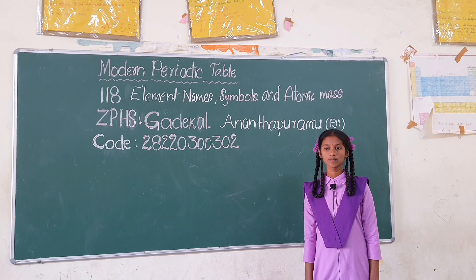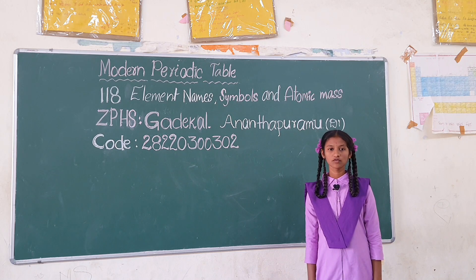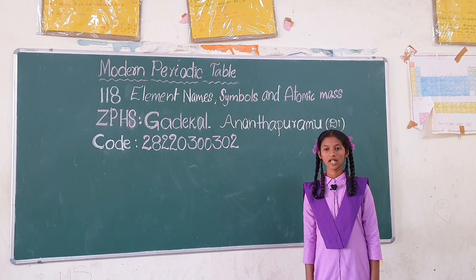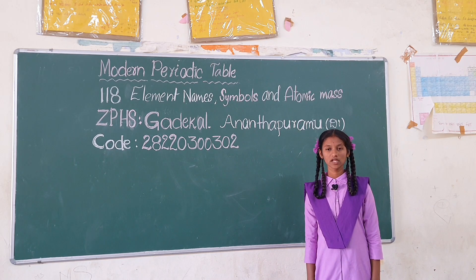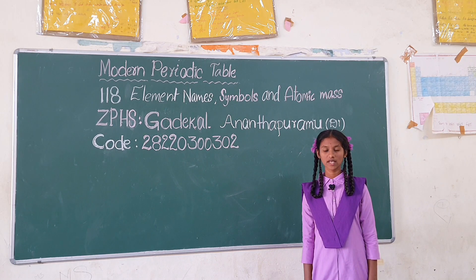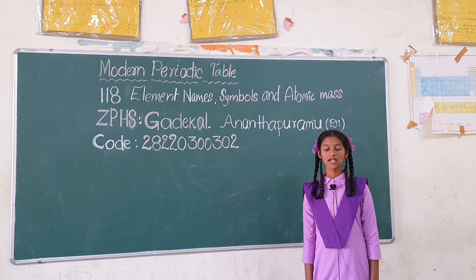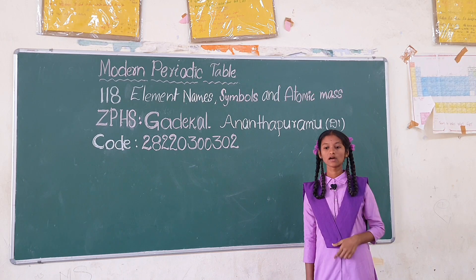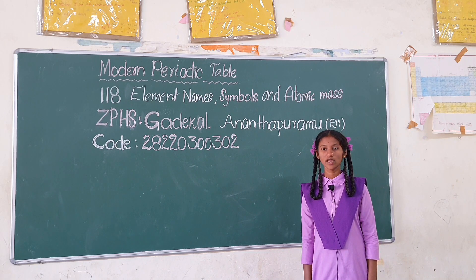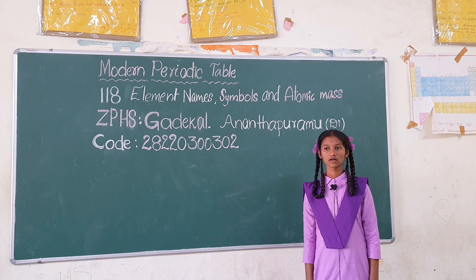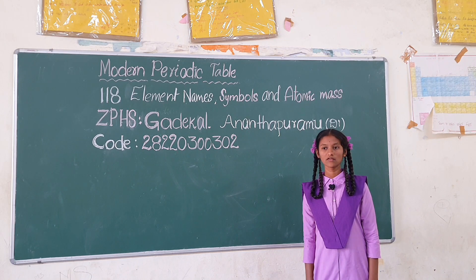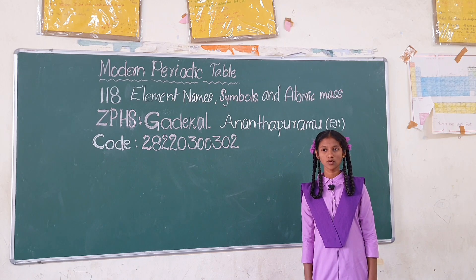Einsteinium Es 252, Fermium Fm 257, Mendelevium Md 258, Nobelium No 259, Lawrencium Lr 262, Rutherfordium Rf 265, Dubnium Db 268, Seaborgium Sg 271, Bohrium Bh 270, Hassium Hs 277, Meitnerium Mt 276, Darmstadtium Ds 281, Roentgenium Rg 280, Copernicium Cn 285, Nihonium Nh 284, Flerovium Fl 289, Moscovium Mc 288, Livermorium Lv 293, Tennessine Ts 294, Oganesson Og 294.